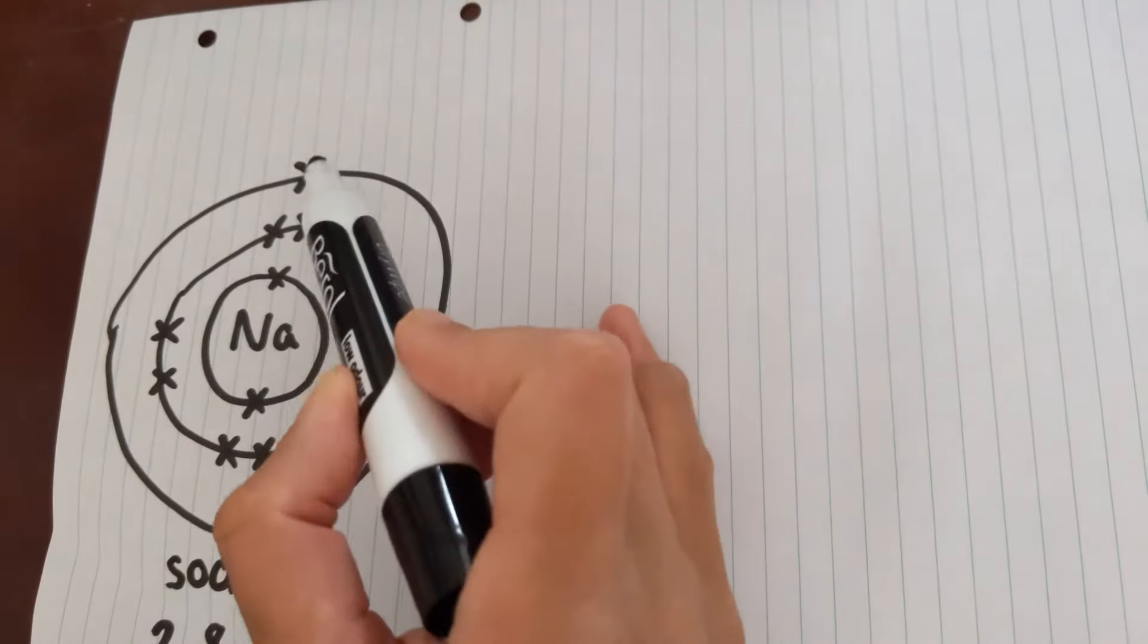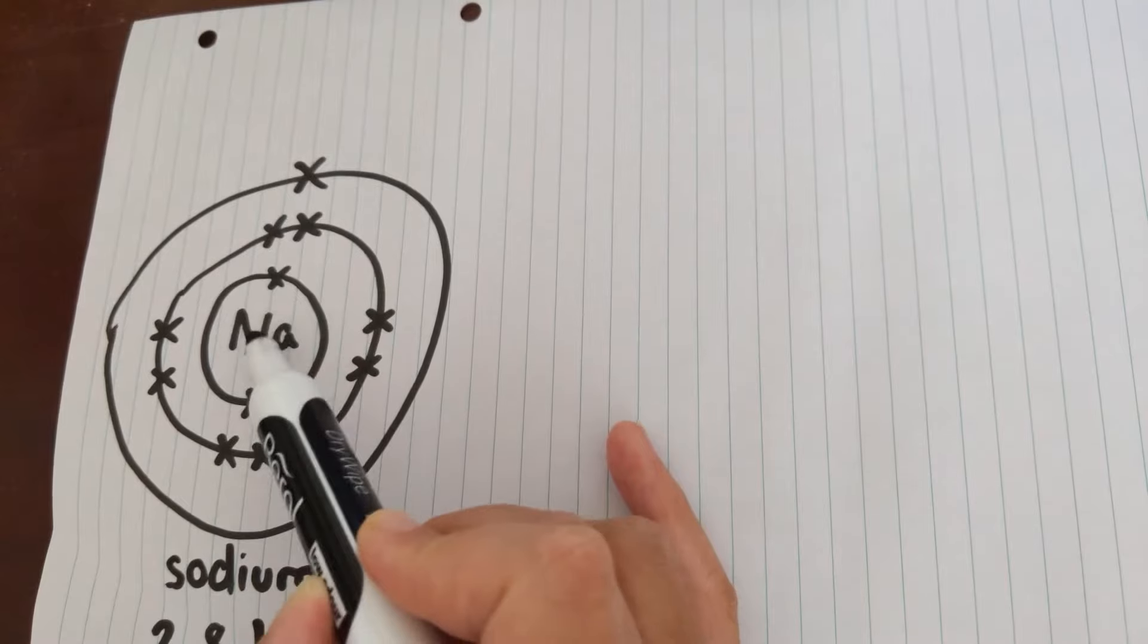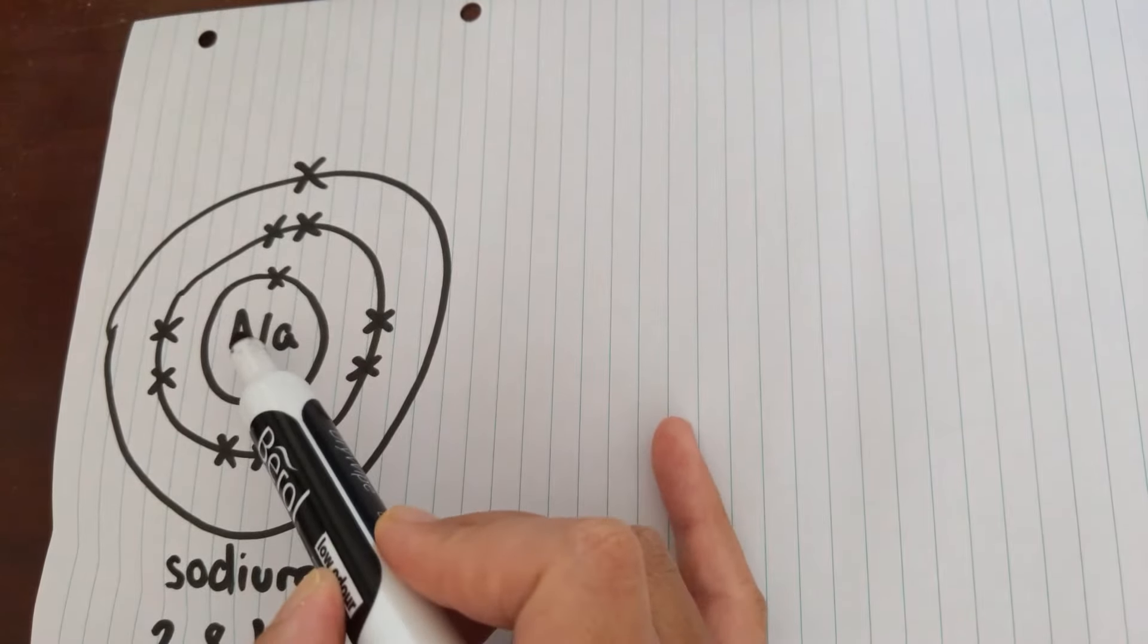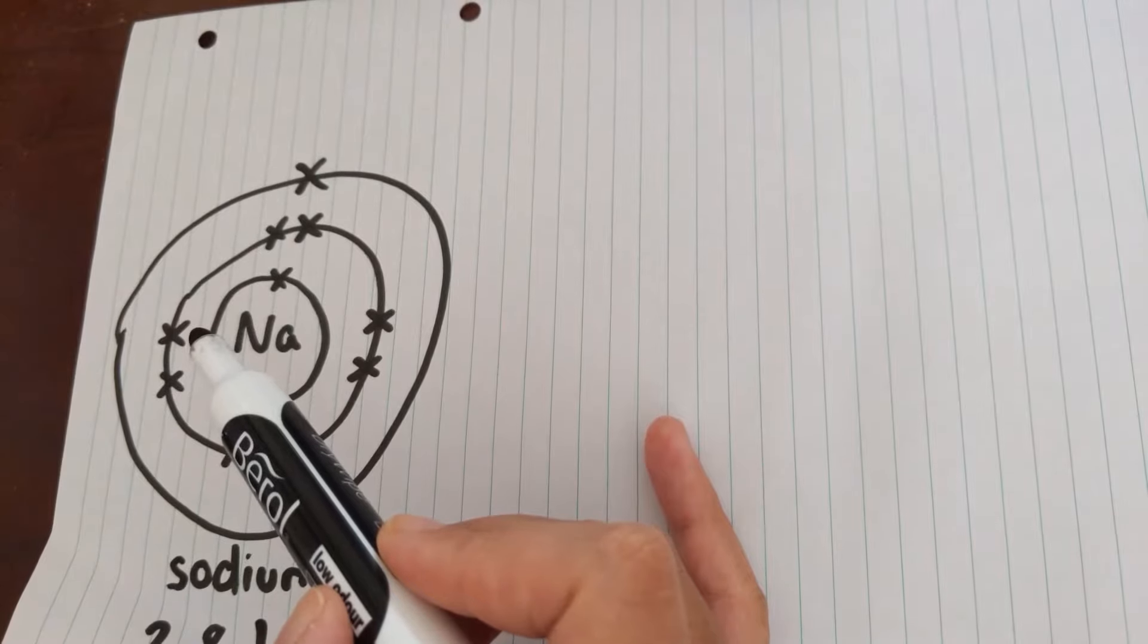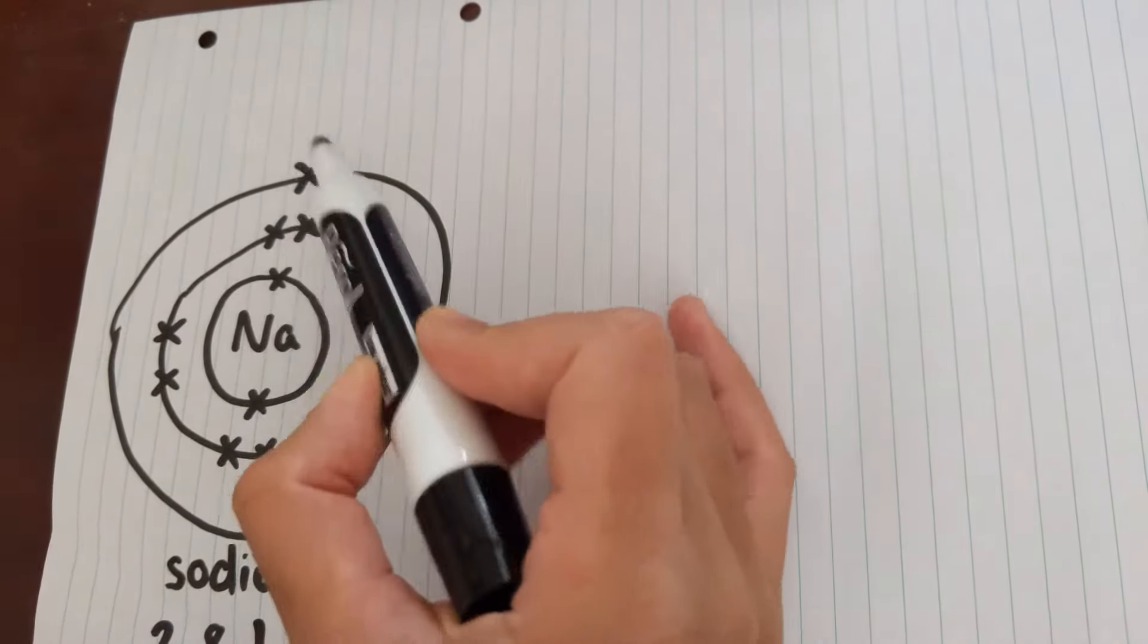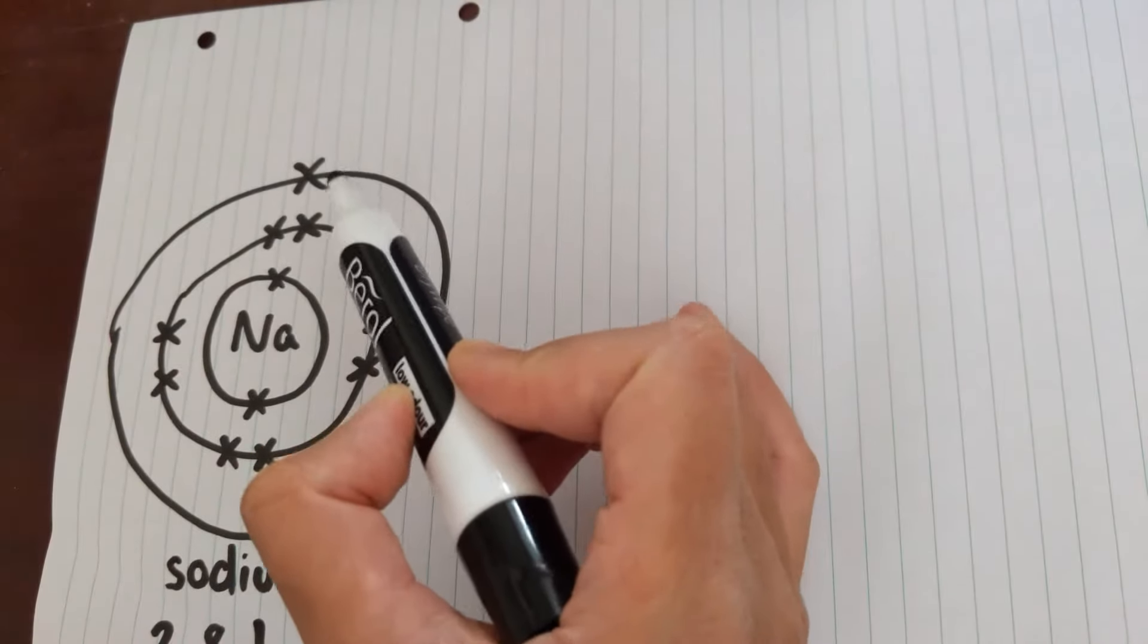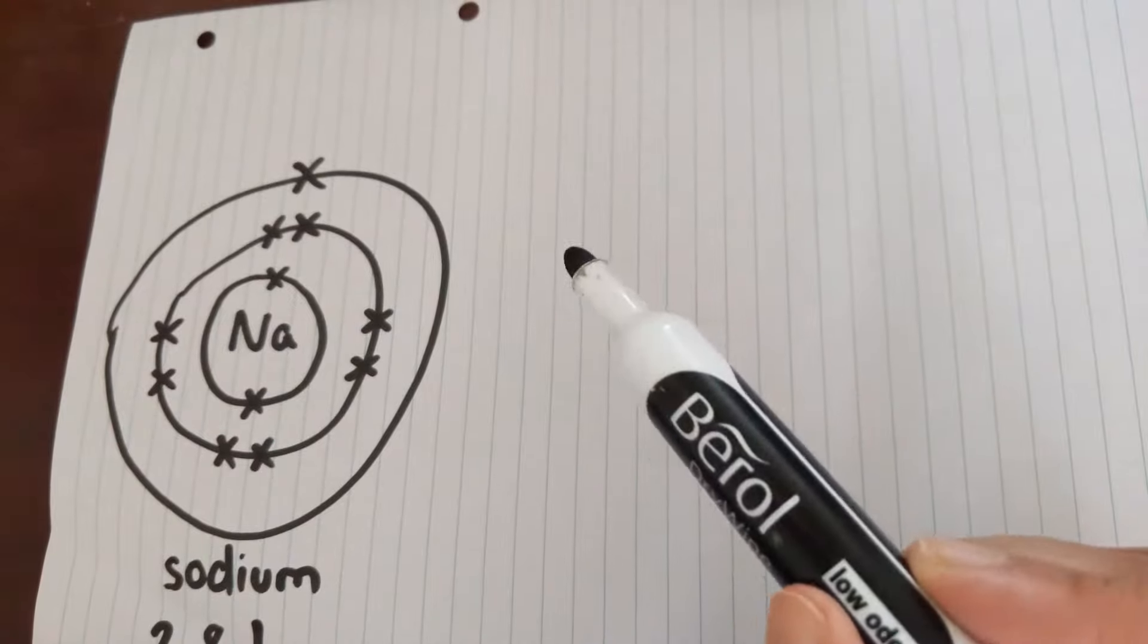So because this electron is furthest away from this positively charged nucleus that consists of 11 protons and 12 neutrons, we worked that out last time, that electron is the one that's going to take part in interacting with other chemicals, other elements.